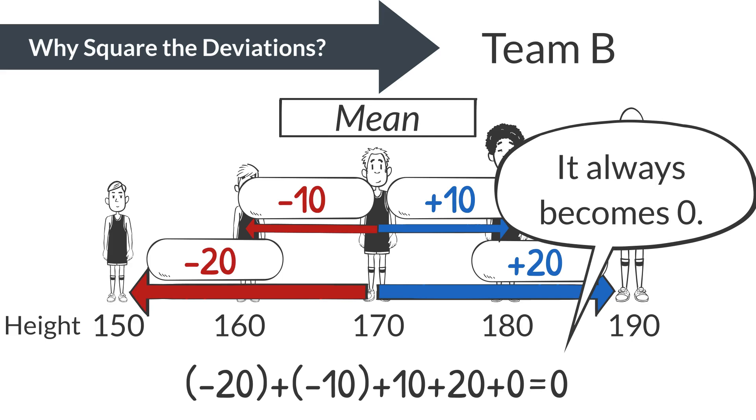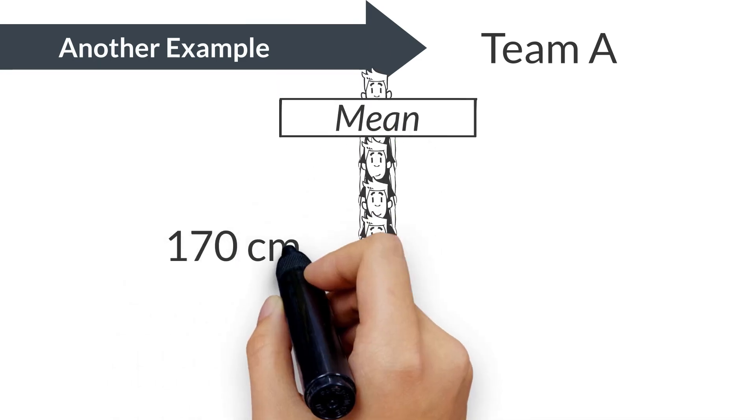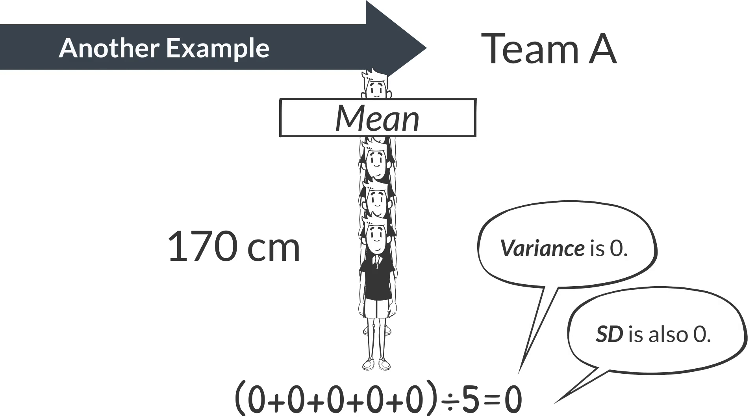Squaring the deviations solves this issue. In the example of Team A, if every player is exactly 170 centimeters tall, the deviation from the mean is zero for all, leading to a variance of zero. So, the team's height variance and standard deviation would be zero.